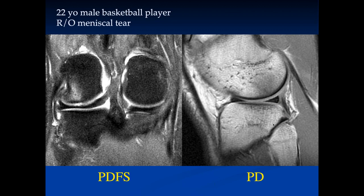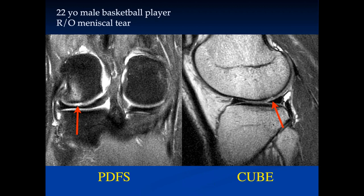A 22-year-old male basketball player, ruled out for meniscal tear. Looking at the lateral meniscus, coronal PD fat sat images show a focal defect of the articular cartilage of the lateral femoral condyle with some bone marrow edema. The PD image doesn't show much of it, but on the T2 cube image you can see signal abnormality of that articular cartilage.